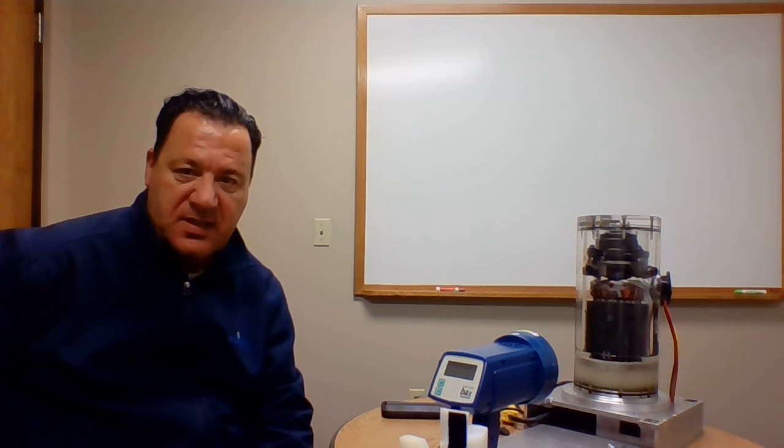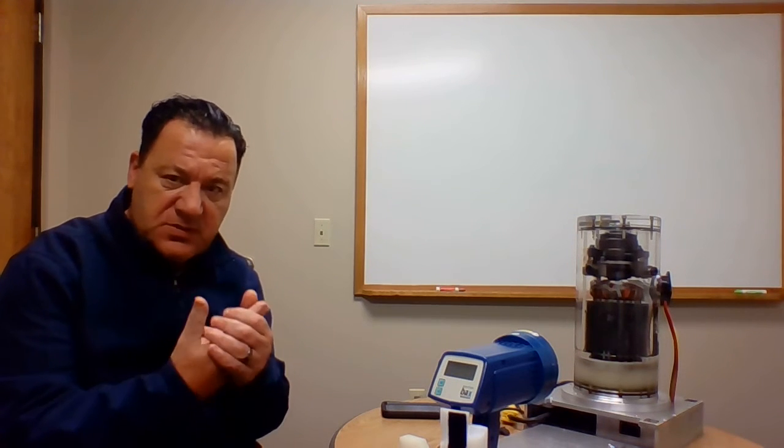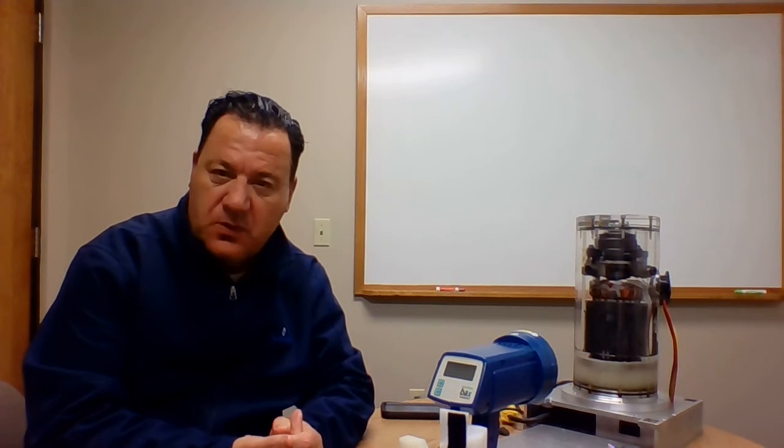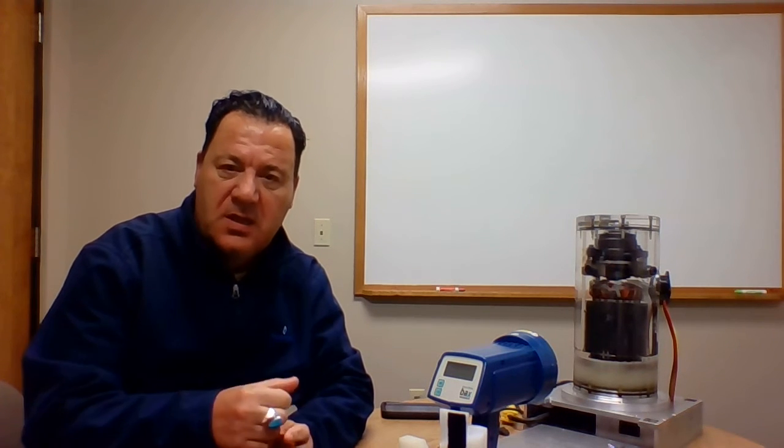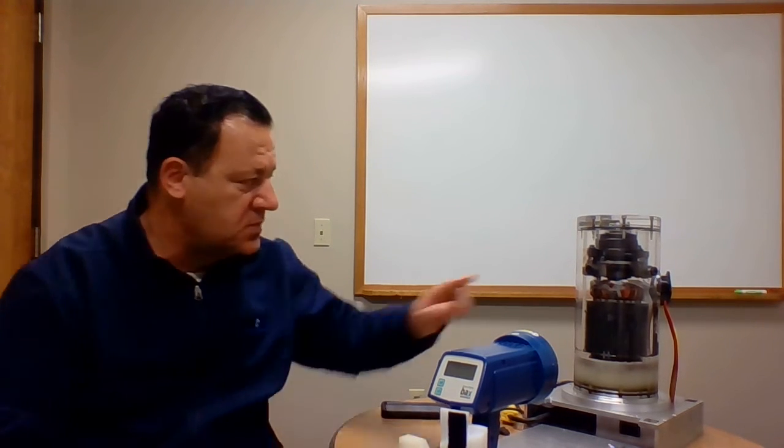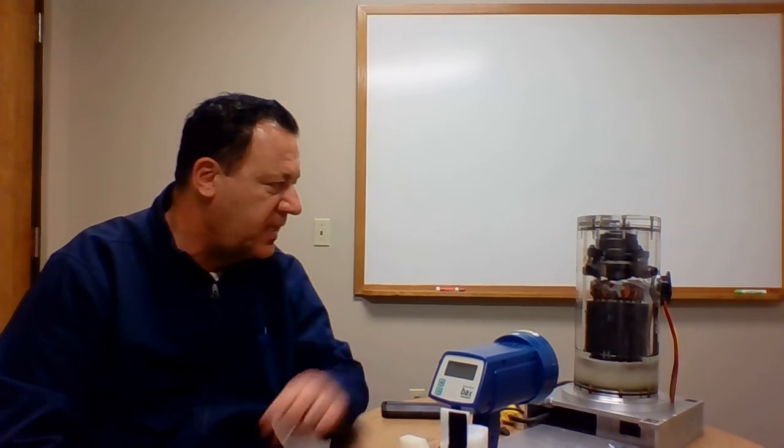As you know, we've talked about this before. We have the two scroll sets. The upper scroll, we refer to as the fixed scroll. The lower scroll is the orbiting scroll. On top of that is our floating seal. On the bottom of that is our old encoupling. We're sitting on top of this straddle bearing here.